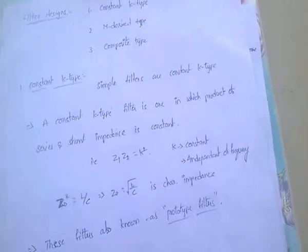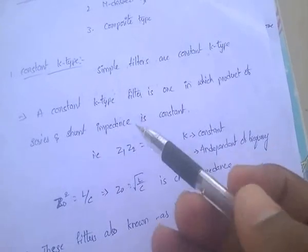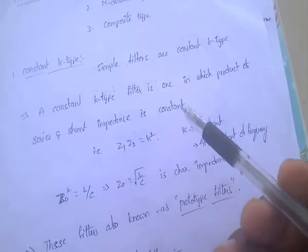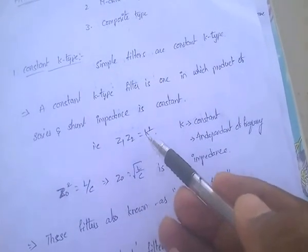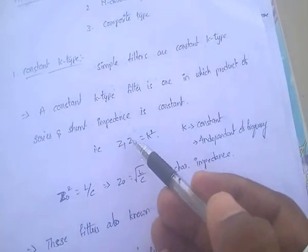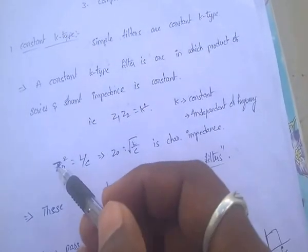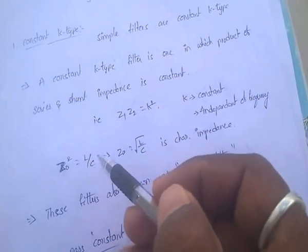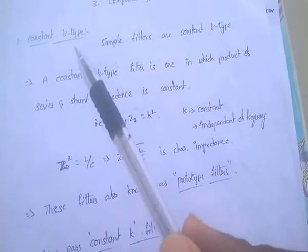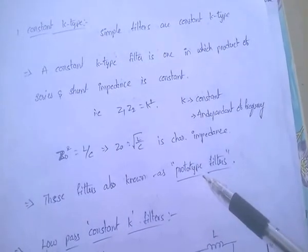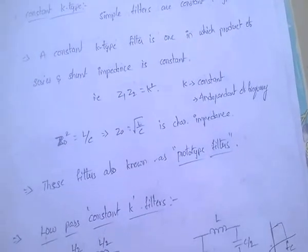Coming to the constant K type filter — these are simple filters. A constant K type filter is one in which the product of the series element and shunt element is constant. That is, the product of series impedance and shunt impedance is constant. The characteristic impedance Z₀² = L/C, that is Z₀ = √(L/C). These constant K type filters are also called prototype filters — a very important point.